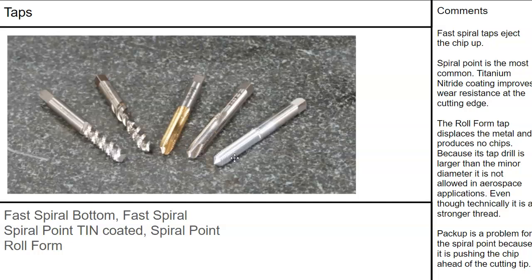Then there's the roll form tap — it has a continuous thread with just a little relief through the middle. Roll form displaces material rather than shearing it, generating a stronger thread. However, the pitch diameter is not as controllable or measurable. It is not in mil specs, and a lot of aerospace applications won't allow the roll form thread.